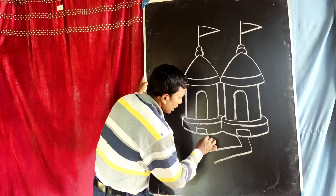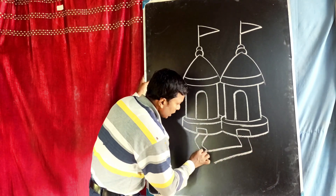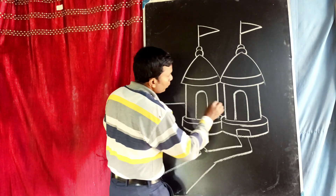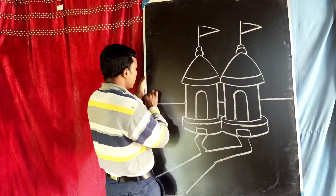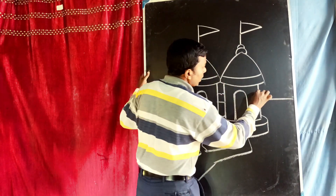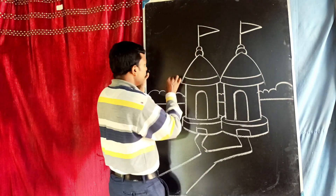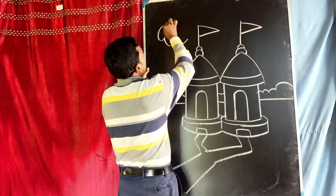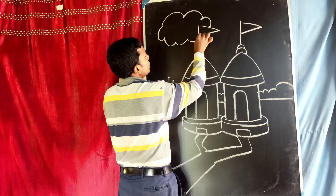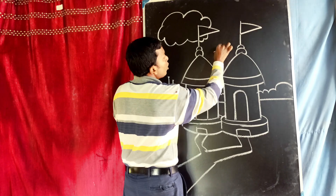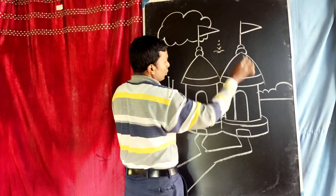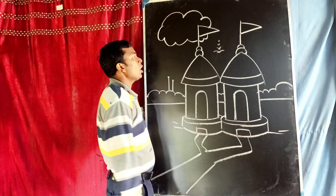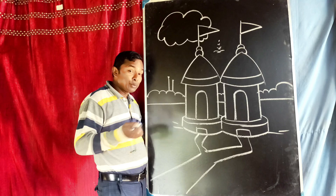এরকম টেনো আঁকা বাঁকা রাস্তা একটা আঁকা বাঁকা নিচে দেখো তাকিয়ে। এক-দুই শজা দ্যাখো কী মজা। আঁকো আঁকো, এইভাবে করো। পাখি পর পর ছোটো, ওপর দেকে ওঠো। এই মন্দিরের পরিবেশ সুন্দর করো।